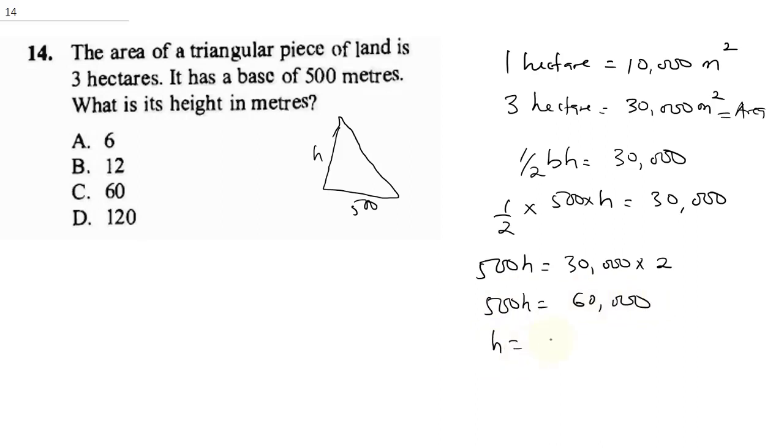Therefore, our H will be 60,000 divided by 500. Our double zero cancel out the double zero. 600 divided by 5 is going to give us 120. So our correct answer here, it's going to be D.